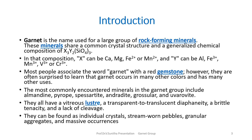Most people associate the word garnet with a red color gemstone. However, garnet may occur in different colors, and they have other uses also. The most commonly encountered minerals in this group include Almandine, Pyrope, Spessartine, Andradite, Grossular, and Uvarovite. All these garnet group minerals have a vitreous luster and are transparent to translucent. They have brittle tenacity, lack of cleavage, and belong to the isometric crystal system. They can be found as individual crystals, pebbles, granular aggregates, and massive occurrences.